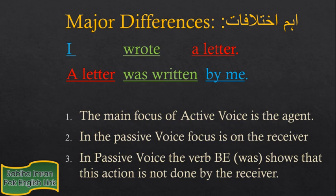अगर इन दोनों जुम्लों को analyze किया जाए तो पता चलता है कि active voice का main focus agent पर होता है यानि किसने क्या किया, जबके passive voice में यह focus receiver पर होता है कि receiver के साथ क्या हुआ। एक और एहम बात यह भी है कि passive voice में verb 'be' की कोई भी form इस्तेमाल की जाती है — जो हम इस वीडियो के अगले पार्ट में सीखेंगे — जिससे मालूम होता है कि action receiver ने perform नहीं किया।